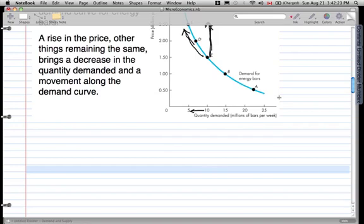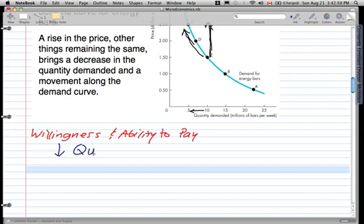Another thing I want to talk about is willingness and ability to pay. This can be seen in the demand curve. Like I just said, the quantity goes down when the prices rise. There's always someone that's willing to buy at that price.